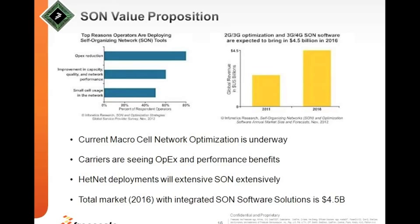Small cell underlay is really going to dominate network deployment, and these HetNets will definitely use SON extensively. The total market for optimization of 3G and 4G networks is expected to be about $4.5 billion by 2016. This is really an evolving market with a lot of work to be done, and it is going to be the key element of next-generation network deployment.